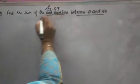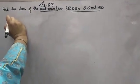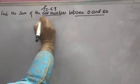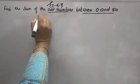Dear students, here is 5.3 question number 14 — a very important question. Find the sum of the odd numbers between 0 and 50.